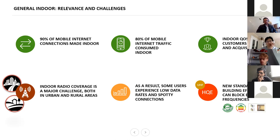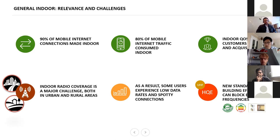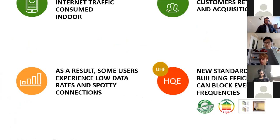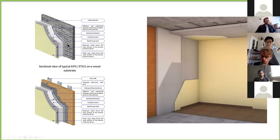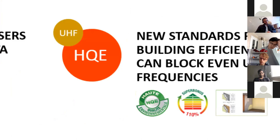Things are getting even worse because new thermal efficiency standards for buildings are coming. In France, for example, there is the HQE new standard: a new protective layer applied to external walls which increases thermal efficiency quite a lot but blocks most radio waves. These are well-known problems — for example in the Plateau de Saclay new building where Telecom Paris is located, indoor connections are really poor. In Italy, the government is refunding 110% of expenses for installing this kind of thermal protection.